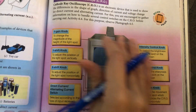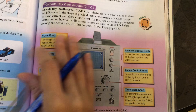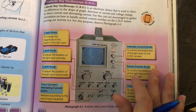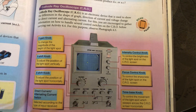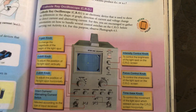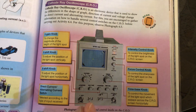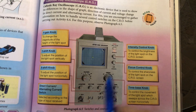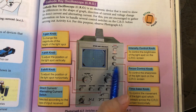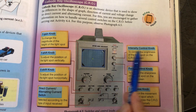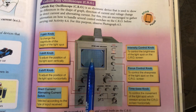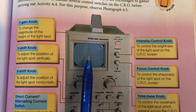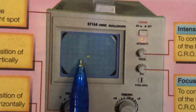The CRO has a focus control knob to make sure the dot is very fine — if it is very blurry and big, you adjust this knob to focus it. The intensity control adjusts the brightness of the green fluorescent light dot.